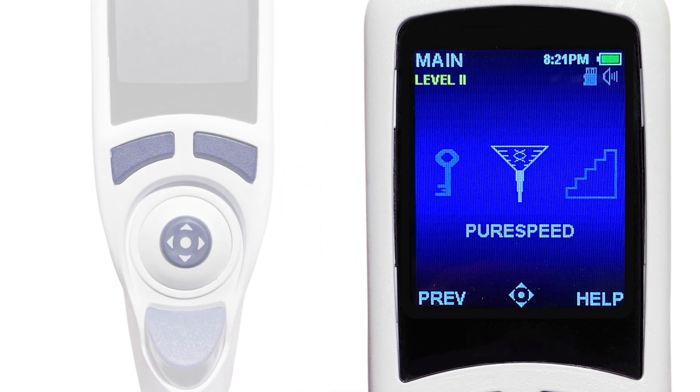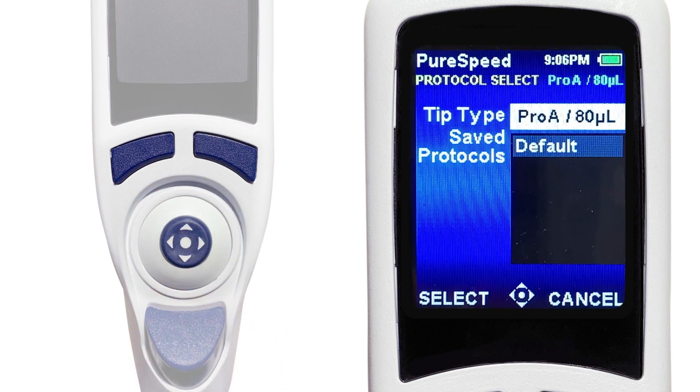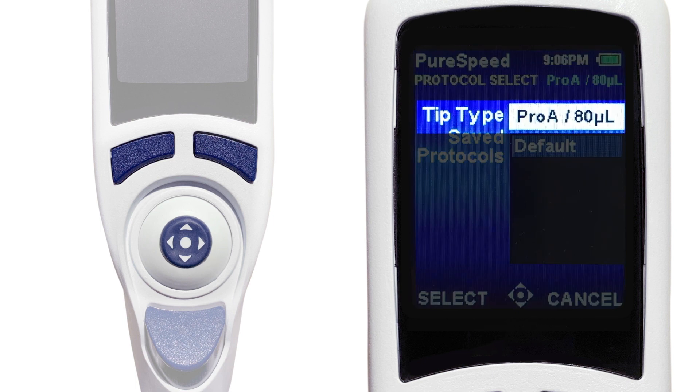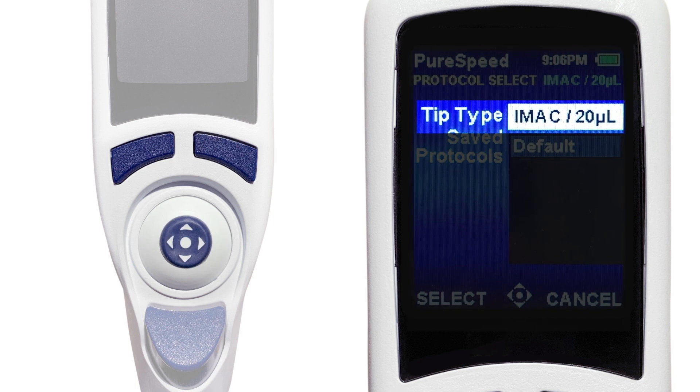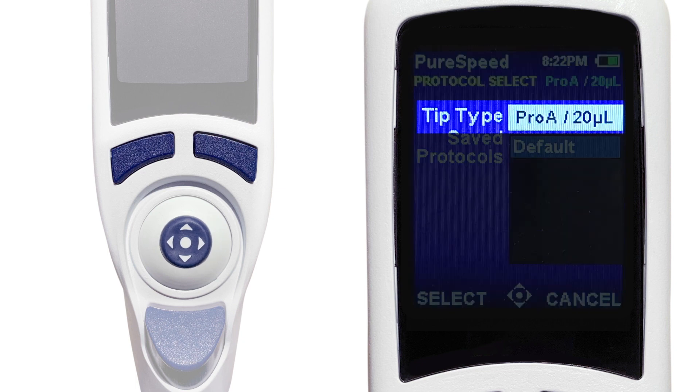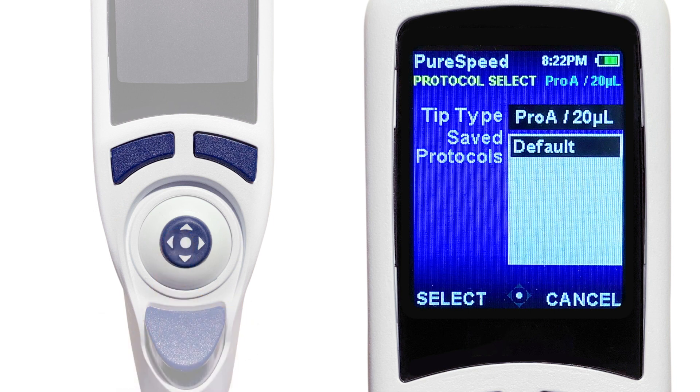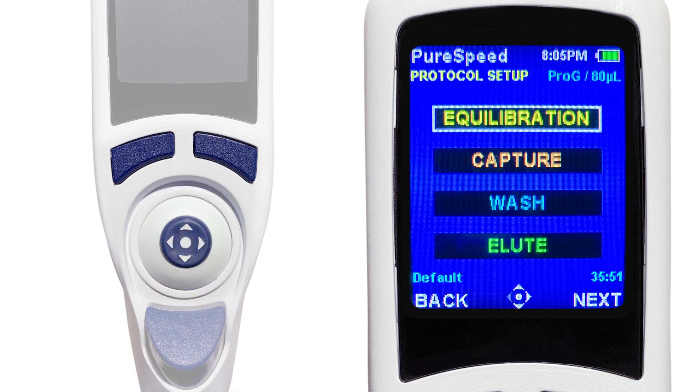When you turn the pipette on, you will see the PureSpeed selection. Press down on the joystick circle to enter the PureSpeed program. Your ME system comes pre-programmed for Pro-A and G, IMAC, and Ion Exchange Phi-Tip columns. Use the joystick controls to select the appropriate Phi-Tip column and resin bed. Your selection will be highlighted in white. Then press down on the joystick to select the resin. Then use the joystick up and down controls to select the pre-programmed protocol for that resin and press down on the joystick to select it.